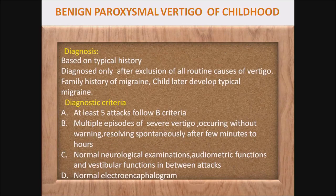Diagnosis is based on typical history because all otoneurological examination and radiological examinations are normal in these patients. Diagnosed only after exclusion of all routine causes of vertigo. Family history of migraine is usually present in the mother, and the child later develops typical migraine.